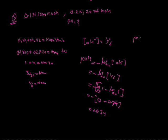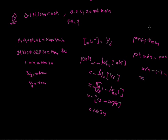Now we want to find pH. We know that pH plus pOH equals 14. So pH equals 14 minus pOH, which is 14 minus 0.74, giving pH equals 13.26. The solution is basic, so the answer must be greater than 7. pH of the solution is 13.26.